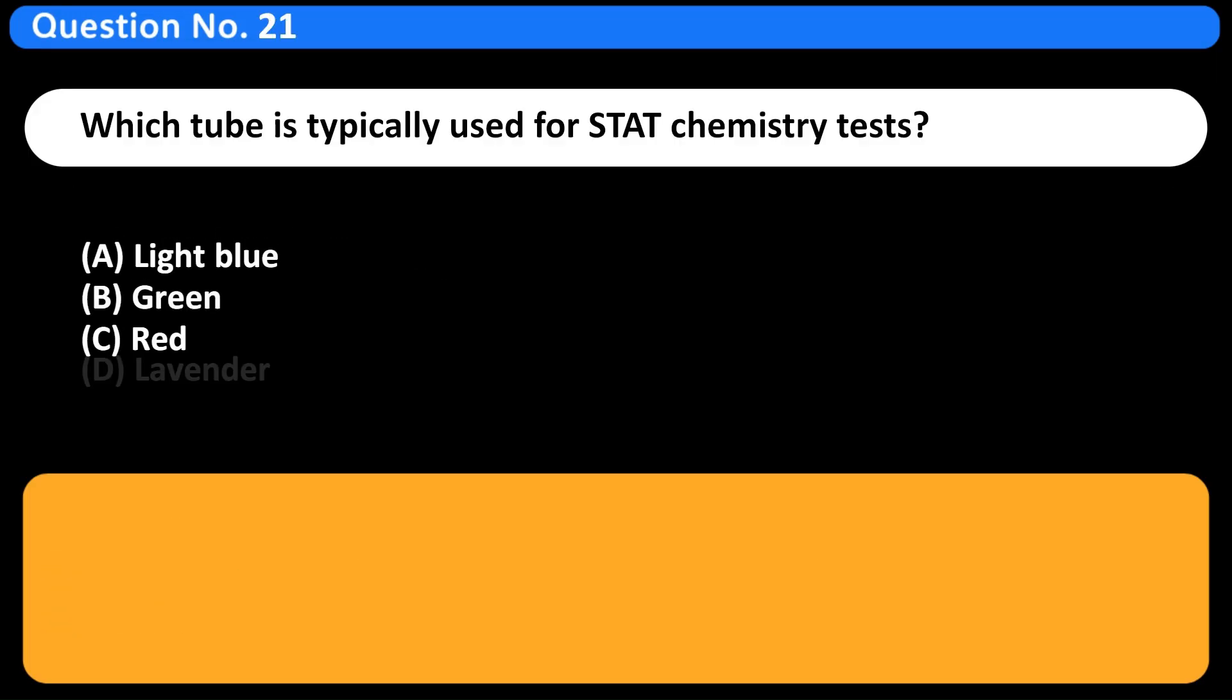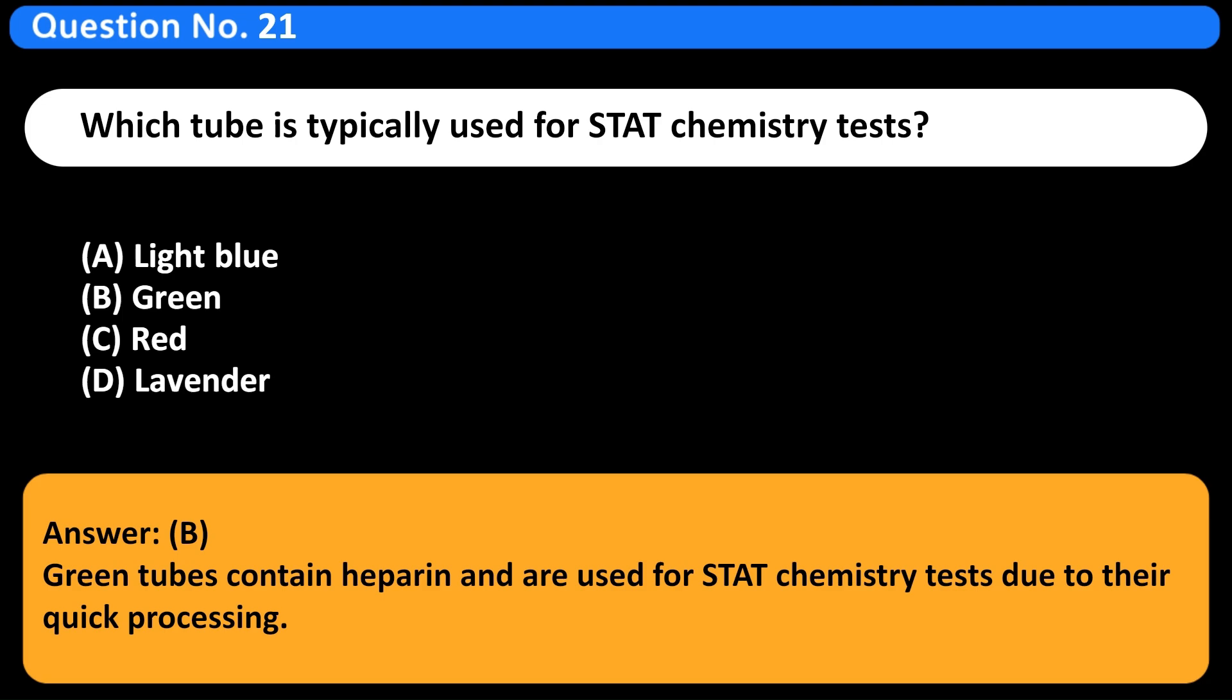Which tube is typically used for stat chemistry tests? A. Light blue. B. Green. C. Red. D. Lavender. Answer B. Green tubes contain heparin and are used for stat chemistry tests due to their quick processing.